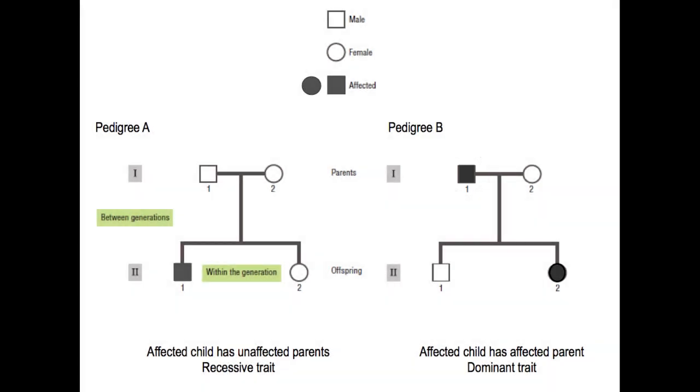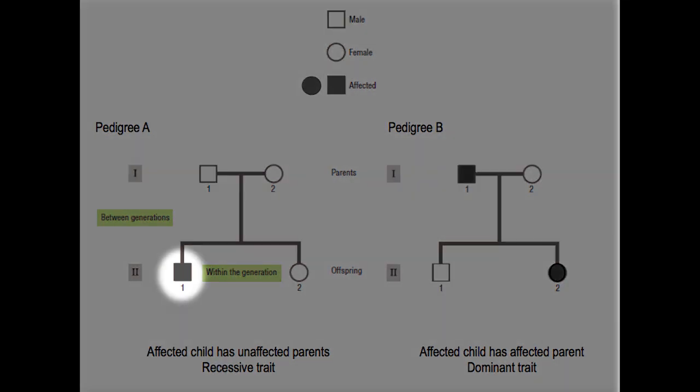The first thing to look for when analyzing a pedigree is whether there are unaffected parents who have an affected offspring. Here in pedigree A, the son, 2-1, is affected, but neither of his parents show the trait. We can deduce that the trait is recessive.